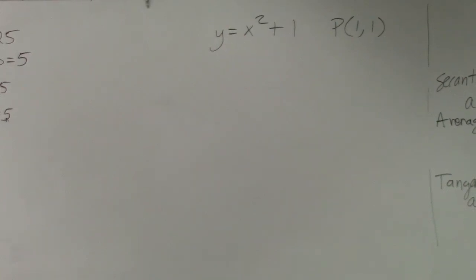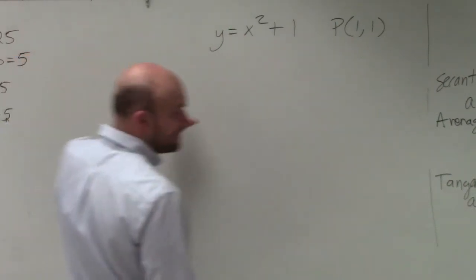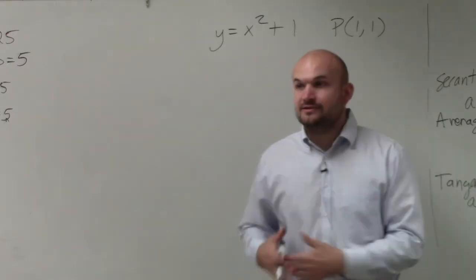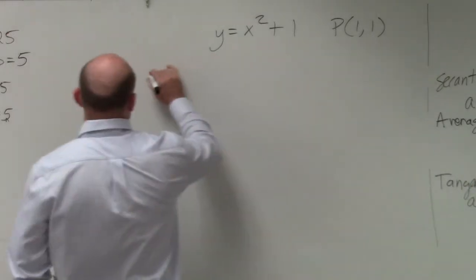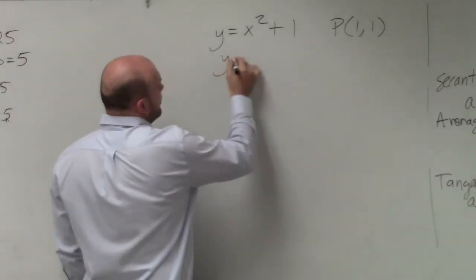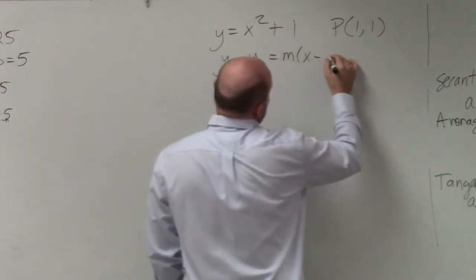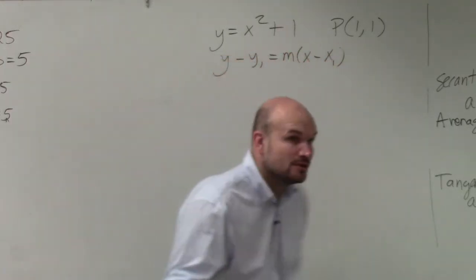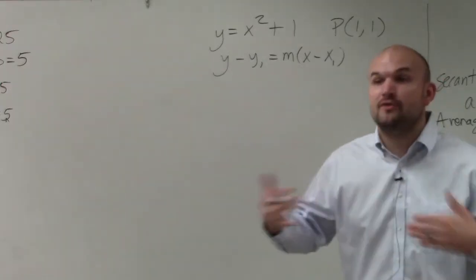1 comma 1. So we want to write the equation of this line. And to write the equation of the line, basically you need to remember we have the formula y minus y₁ equals m times x minus x₁. That's point-slope form, which is going to come up over and over again.